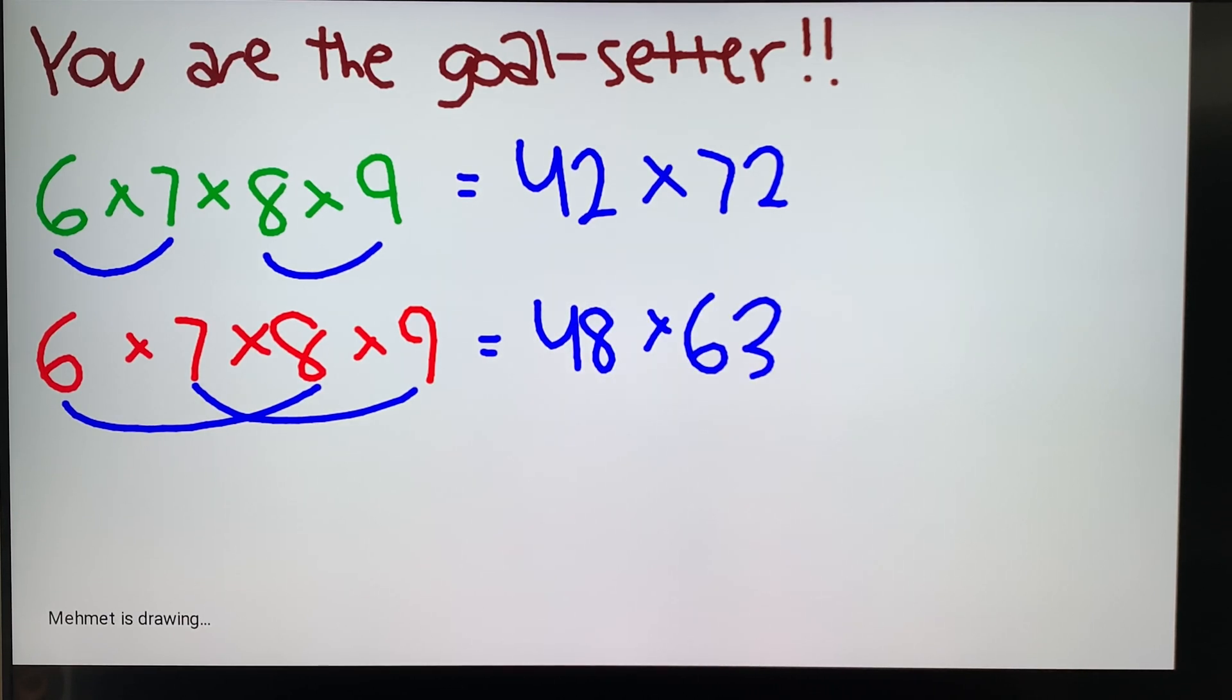And then we could do, and there's a third option as well, 6 times 9, and then 7 times 8. And your goal here would be 56 times 54.